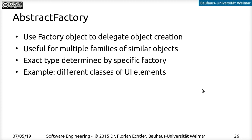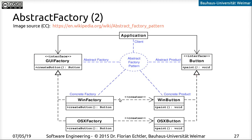Now let's talk about the abstract factory. The abstract factory is a pattern where we don't create objects on our own anymore — we don't use 'new object' or something — but rather call a method on a factory object and delegate the task of object creation to that factory object. The original use case for this was to create different types of user interface elements. If you have multiple families of objects that are related and basically follow the same inheritance structure, this is a very good example. The important part is that for each family of objects, you also have an individual type of factory. The UML pattern looks like this and you can already see the idea behind it.